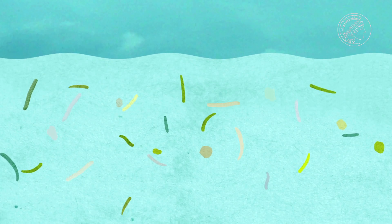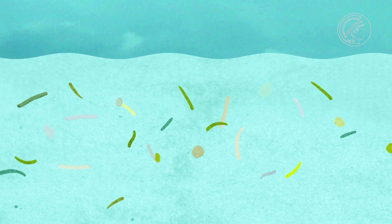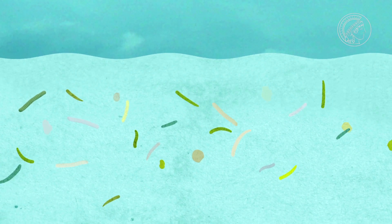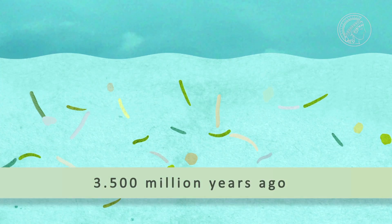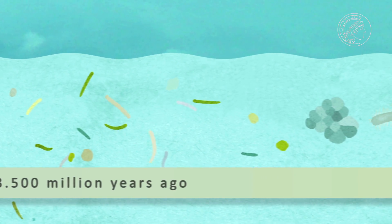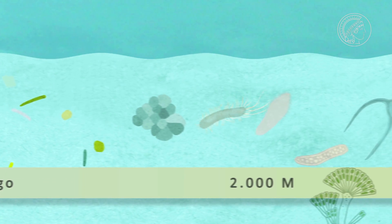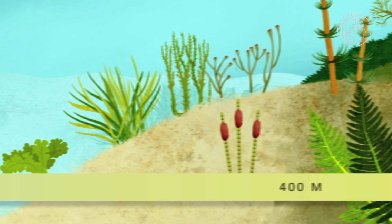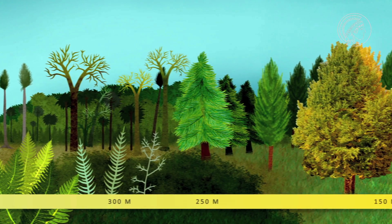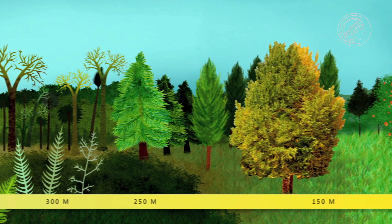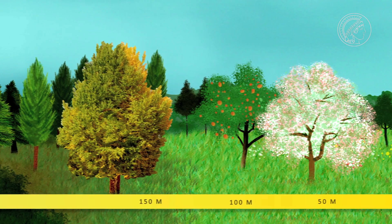Over the course of time, chloroplasts have transferred a large percentage of their genes to the cell nucleus — a procedure which may possibly not yet be complete. For Ralph Bock, one thing is clear: evolution will continue, even if it is not as fast as in his laboratory.